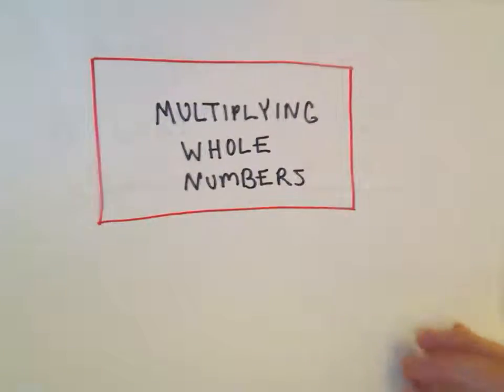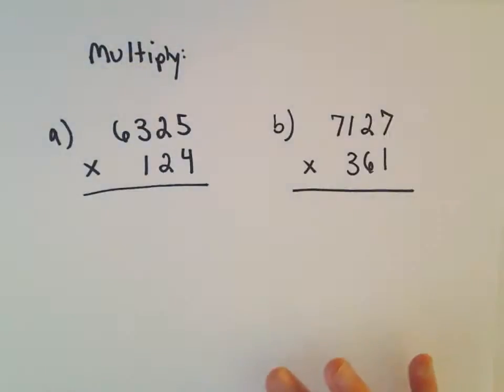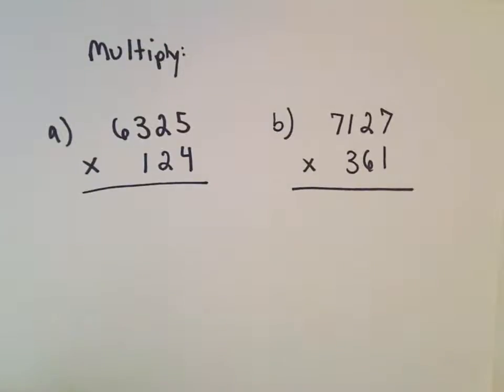Alright, here we're going to look at two last examples of multiplying whole numbers, and I'll probably do this in two separate examples.